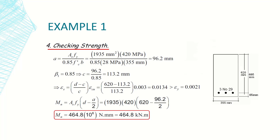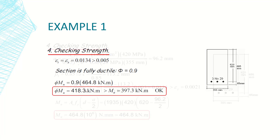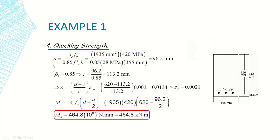Since T = C at the cross-section, I determine: a = A_s × f_y / (0.85 × f'c × b). In our case, a = 96.2 mm. This is the depth of the equivalent rectangular stress block.